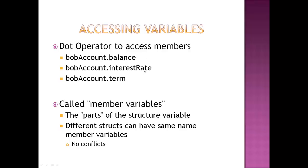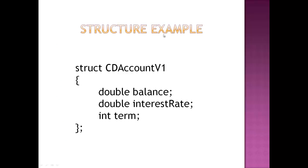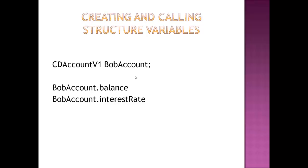Let's take this interest rate idea. Say I have a CDAccountV1 and a CDAccountV2. Maybe CDAccountV1s have a lower interest rate and CDAccountV2s have a higher interest rate — say for home loans: if you qualify for a V1 you get a 4% interest rate, but if you qualify for a V2 you get a 5% interest rate. So I can still use 'interest rate' as a variable on both accounts because I'm going to have other names associated with that when I call them. I can have multiple structures with the same member variable names.